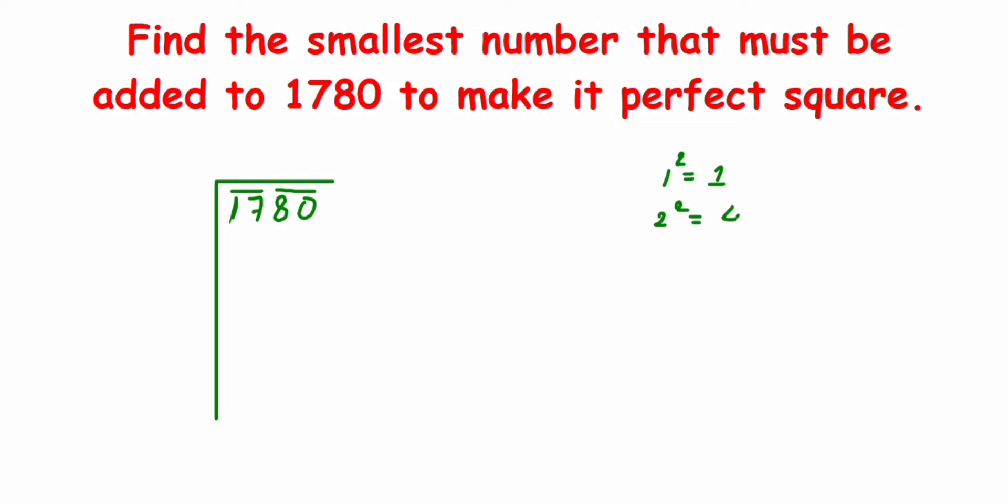We know that one square is 1, two square is 4, three square is 9, and four square is 16, and next is like five square which is nothing but 25. Here I cannot take 25, I cannot take even 9 because 25 is greater than 17.